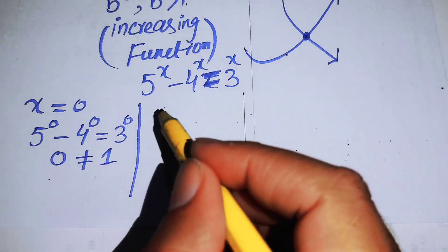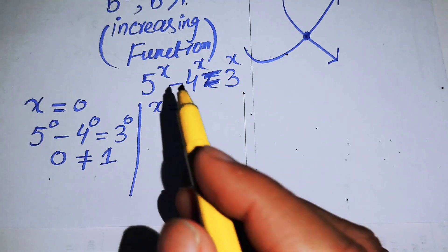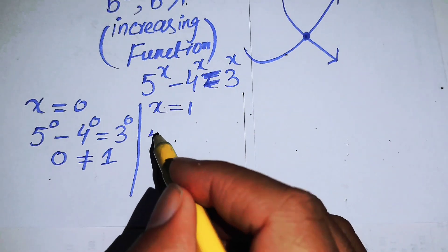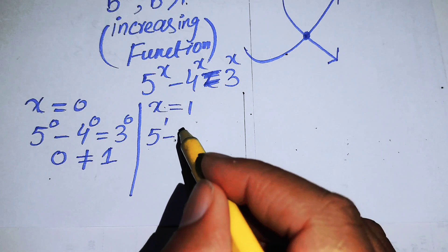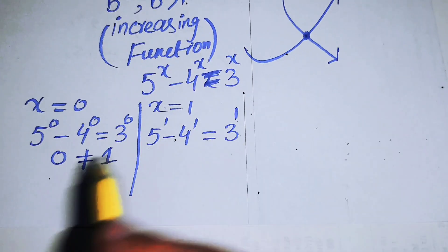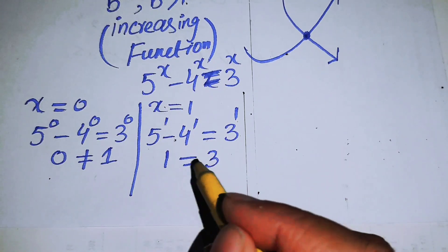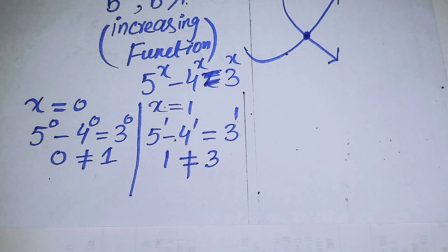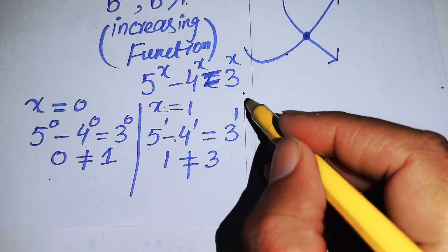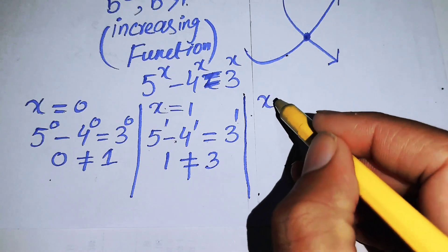Next, we check X equals 1: 5^1 minus 4^1 equals 3^1 gives 5 minus 4 equals 3, which is 1 equals 3. That is not possible, so we reject X equals 1 as well.